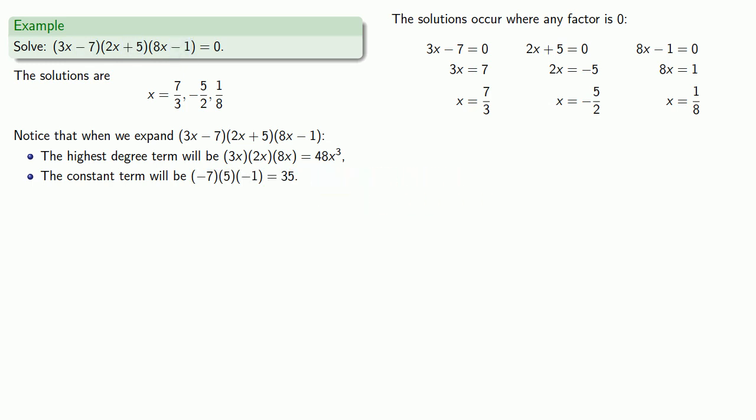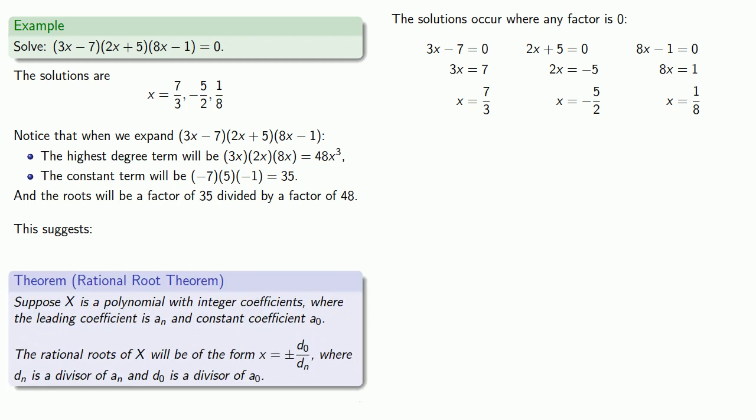And the thing to notice is that every one of our roots is going to come from a factor of 35 divided by a factor of 48. So, for example, this root 7 thirds: 7 is a factor of 35, 3 is a factor of 48. And what this suggests is known as the rational root theorem.